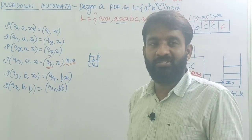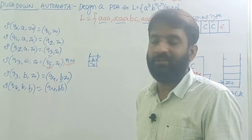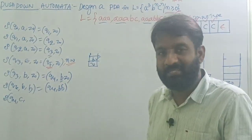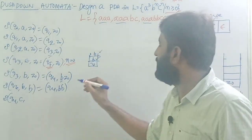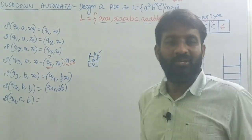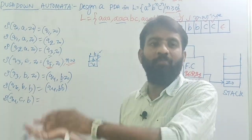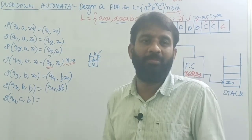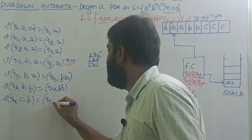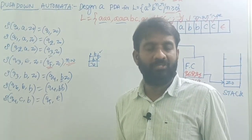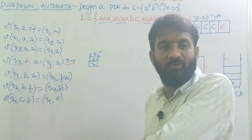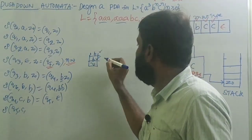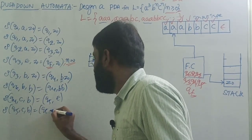Now assume all B's are exhausted — all B's are read onto the stack. C's are starting. Present state is Q4, input symbol is C. The top of the stack is B. Transition: Q4, C, B — map C with B, do the pop operation, and move to the new state Q5. Then transition Q5, C, B — if one more C exists, one more B is on top of the stack, so pop B, remain on the same state Q5.